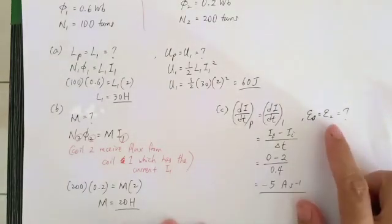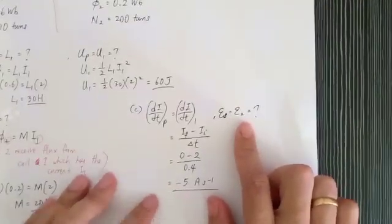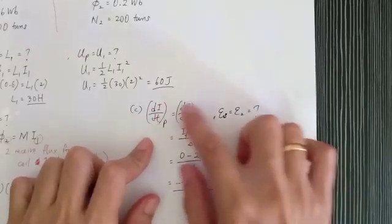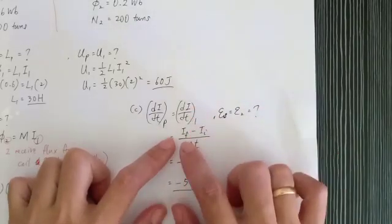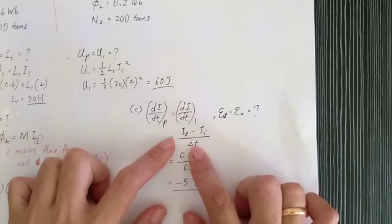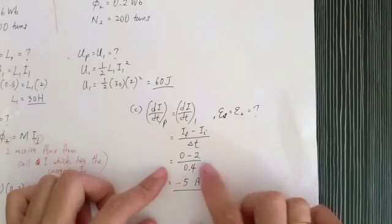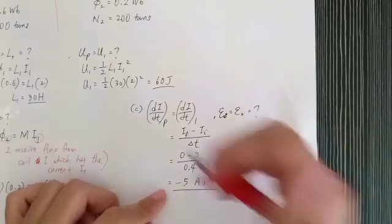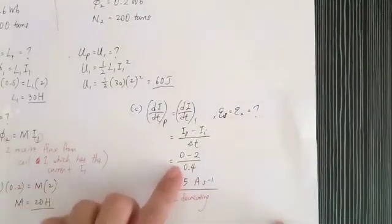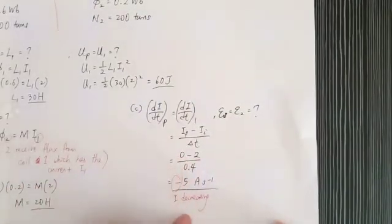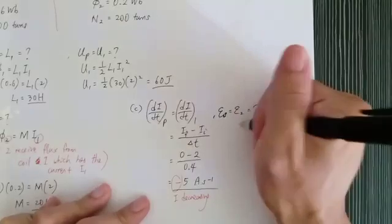For part C, we need to find the EMF generated in coil two. The rate of change of current in coil one is calculated as: dI1/dt = (final current − initial current) / time = (0 − 2) / 0.4 = −5 A/s. The negative sign means the current is decreasing from 2 to zero.